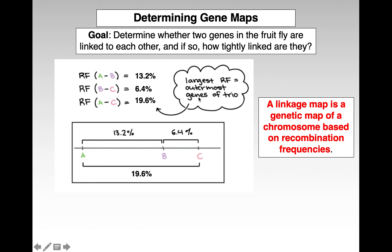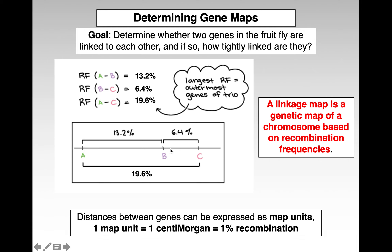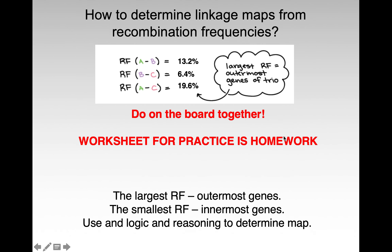For example, if we know the recombination frequencies — say 13.2, 6.4, and 19.6 — you can put those onto a map to determine where genes are on a chromosome. One map unit equals one centimorgan equals 1% recombination. In general, I usually start with the large recombination frequencies, which are the outermost genes, and then work inward.